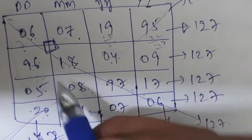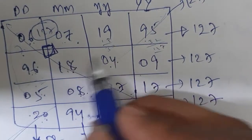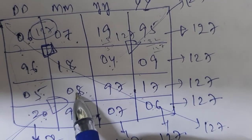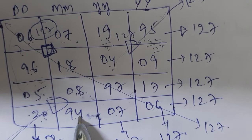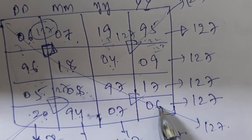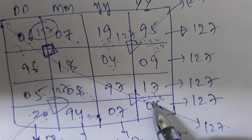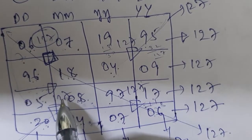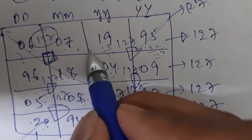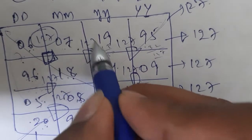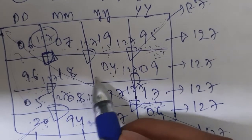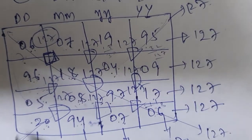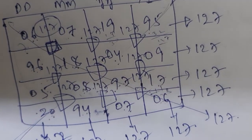Now checking the 2×2 block sums: each block sums to 127. For example, one block gives 96 plus 6 equals 102, plus related elements gives 127. Another block: 5 plus 8 is 13, plus remaining values equals 127. The corner blocks: 6 plus 7 plus 11 plus values equals 127. And the last block: 18 plus 4 plus 97 plus 8 also equals 127. So all 2×2 blocks sum to 127, confirming this is a magic square.